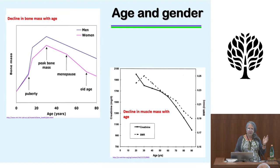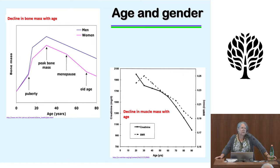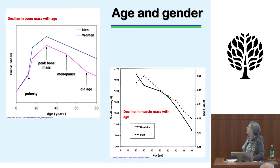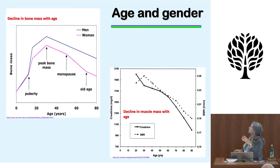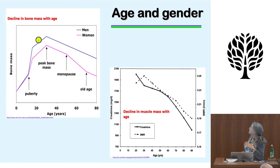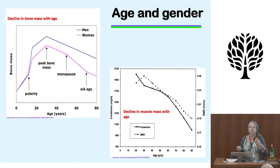Before we get to what we can potentially do, let's talk about what we can't change. You can't change your age, and you can't very easily change your gender. As you grow as a kid, bone mass goes up — in the pink line here for women and the blue line for men. Bone density for men is generally higher, so women are more likely to get osteoporotic fractures. The peak is around 30 years old, and it's all downhill after that — particularly for menopausal women because of estrogen loss, and estrogen is important for bone health.